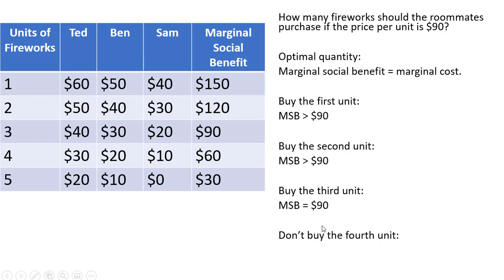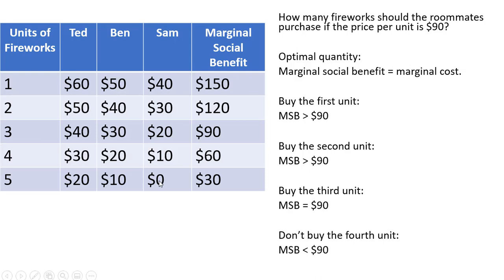The roommates will not buy the fourth unit. It doesn't make sense to buy the fourth unit when the collective benefit is $60, which is less than the price. So the optimal quantity is for these roommates to pool their money together in some fashion to buy three units of fireworks.